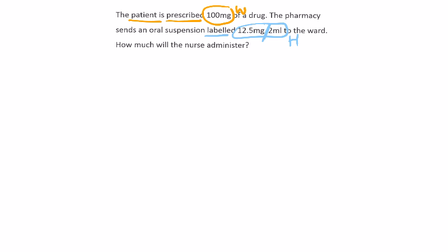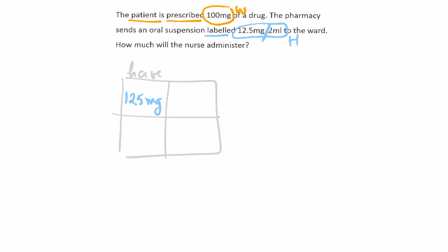Taking time to analyze what each quantity means will really help with the rest of the workings. Let's use the box method — draw the box. I always start with the have. In this case I copy those two quantities into the box: 12.5 milligrams, and write the unit inside the box as well. The per sits in the middle line of the box, so: 12.5 milligrams per two mils. The have is entered; we don't need to worry about the have anymore.